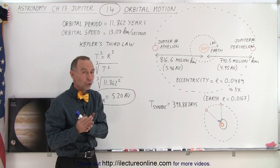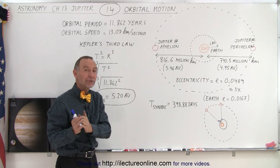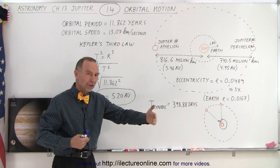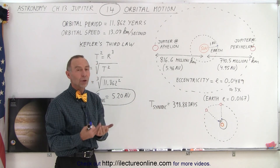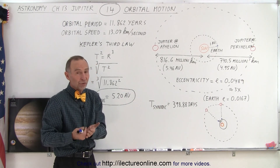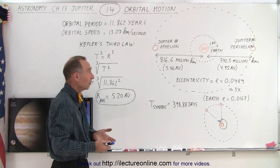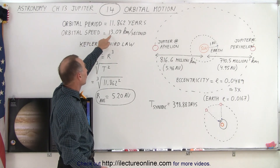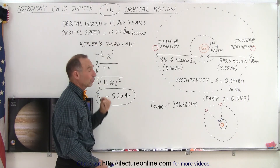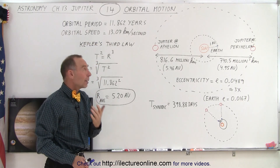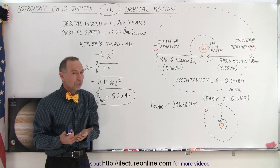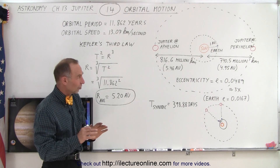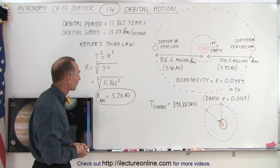That's because Jupiter is quite a bit farther from the Sun than the Earth, and the farther you are from the Sun, the slower the object will travel. The orbital speed of Jupiter is only slightly over 13 kilometers per second, where for the Earth it's almost 30 kilometers per second, just shy of that.